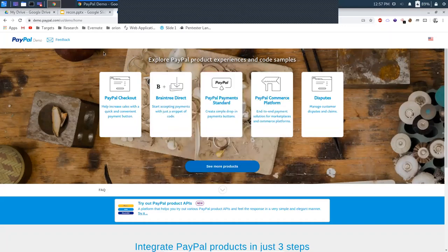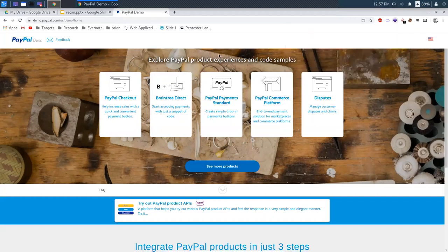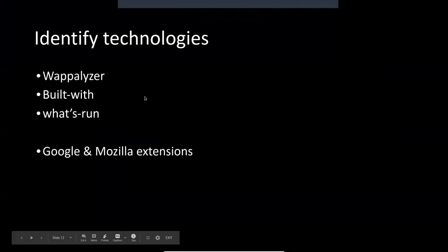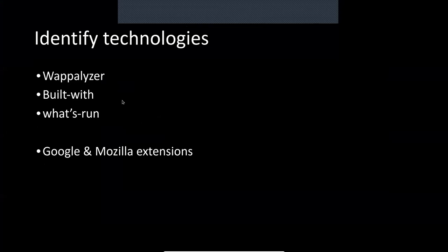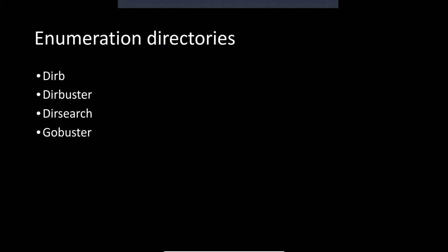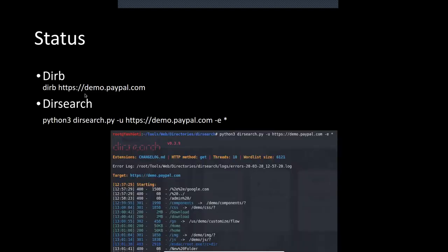So those are the technologies used by demo.paypal.com — these are the useful things for us. The BuildWith tool is a very useful extension that gives you detailed technology information. WhatRuns is also a good tool. Now for directory enumeration, there are many tools available to find hidden directories.